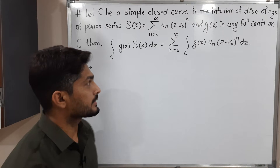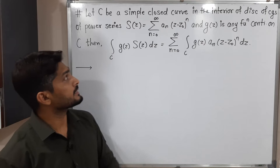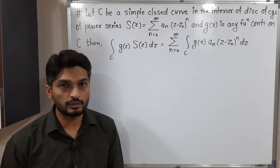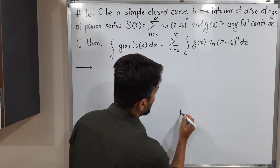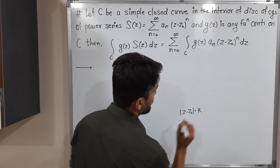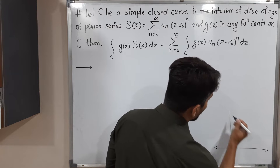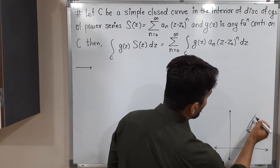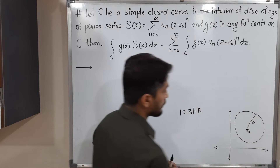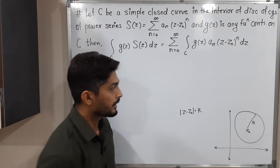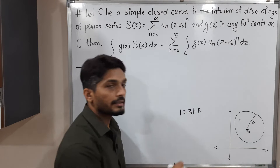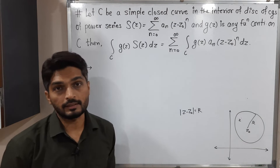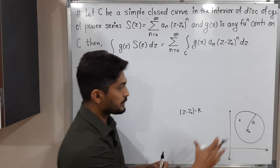In this video we are going to discuss this result. We have a power series S of z equal to this summation, with a disk of convergence where mod(z - z₀) = r — a circle with center z₀ and radius r. If you take any point inside the circle, the power series is convergent, and if you take any point outside the circle, the power series is divergent.